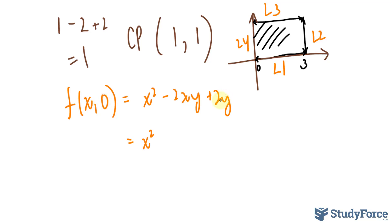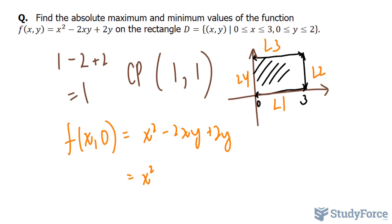Now you evaluate this at the absolute limits of this line. The limits are between 0 and 3. So setting x is equal to 0 and x is equal to 3, we get 3 to the power of 2, that's equal to 9, and 0 to the power of 2 is 0.